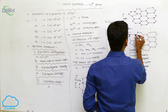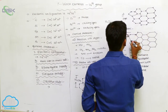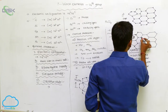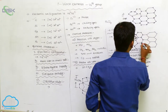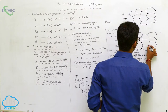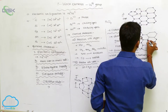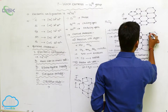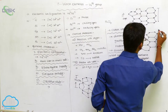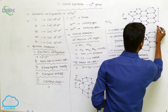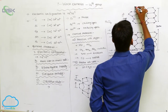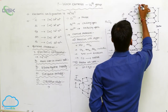Graphite is a soft substance. The distance between the first and second layers is 340 pm, while the C-C bond distance within a layer is 149 pm. Graphite acts as a conductor because the inter-layer distance is large.